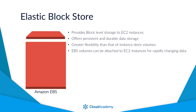EBS volumes can be attached to your EC2 instances and are primarily used for data that is rapidly changing, that perhaps requires specific IOPS. As they provide persistent level storage to your instances, they are ideally suited for retaining important data and as such can be used to store personally identifiable information. In any environment where this is the case, it's essential that the data is encrypted to protect the data on the volume from malicious activity.